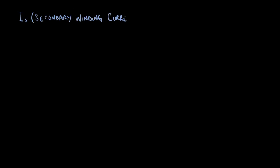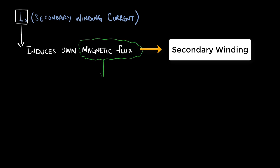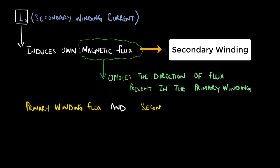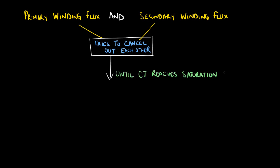This secondary current IS induces its own flux in the secondary winding, which acts in the opposite direction to the flux present in the primary winding. These two fluxes try to cancel each other out, and this process continues until the CT reaches saturation.